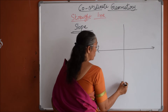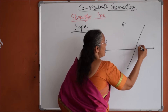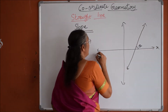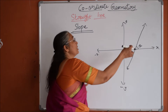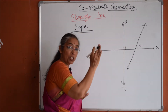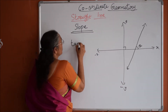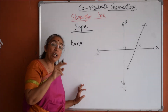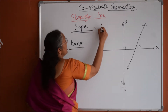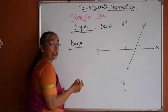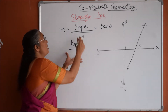Suppose you see a straight line making an angle theta with the positive direction of the x-axis — this is x, negative x, y, negative y. So if a straight line makes an angle theta with the positive direction of the x-axis, then theta is the inclination of the straight line with the x-axis. Then slope is tan theta. So tan of the inclination made by the line with the positive direction of the x-axis is called slope, and it is denoted by the letter M generally. So M equals tan theta, and this is called slope.